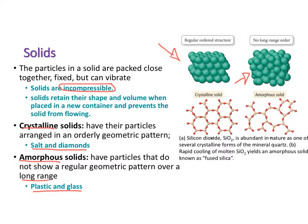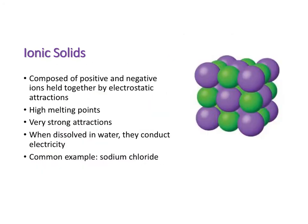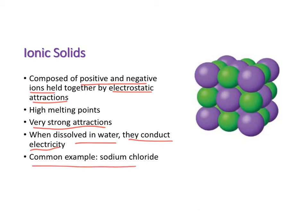Ionic solids are composed of negative and positive ions held together by electrostatic attractions. They have very high melting points — for example, if you're heating a pan and add table salt, that heat is not high enough to melt the salt, because of the very strong attractions between those positive and negative ions. However, when dissolved in water they conduct electricity very well. The most common example is sodium chloride, common table salt.